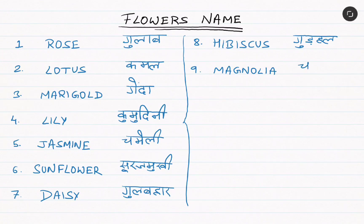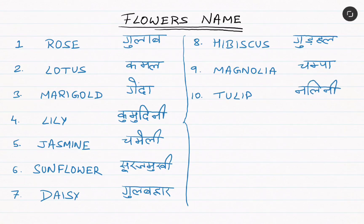Ninth: magnolia, that is champa. Tenth: tulip, that is nalili. That's all in this video. Thank you so much for watching.